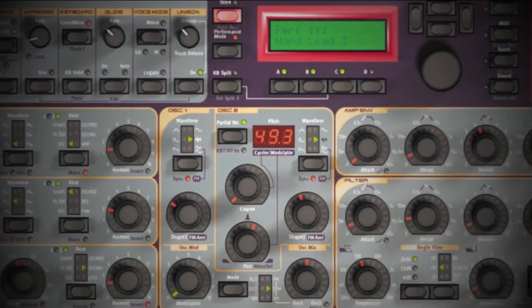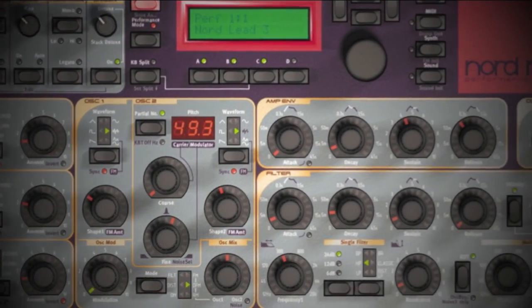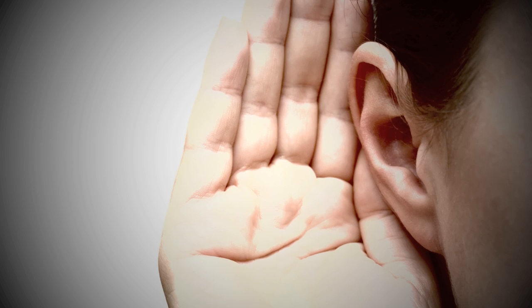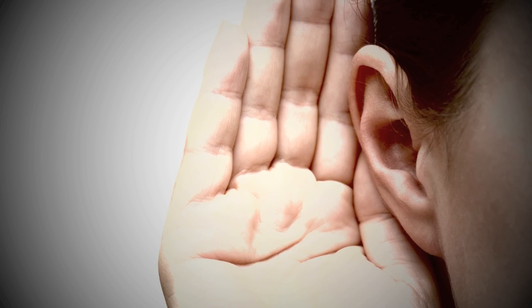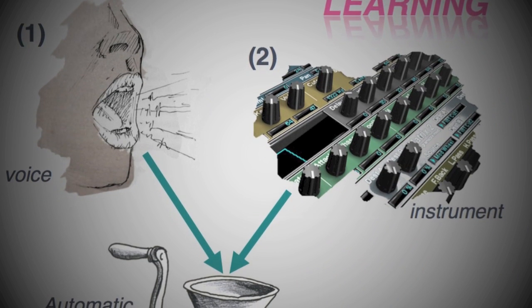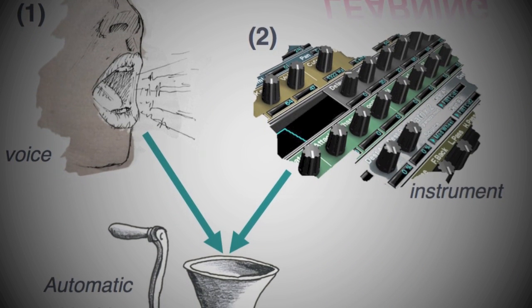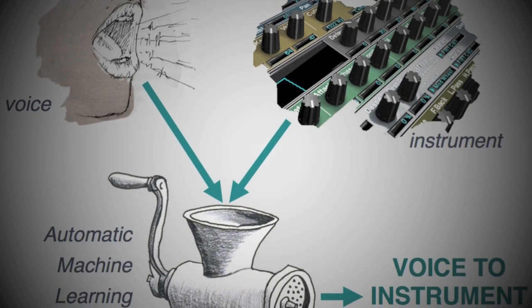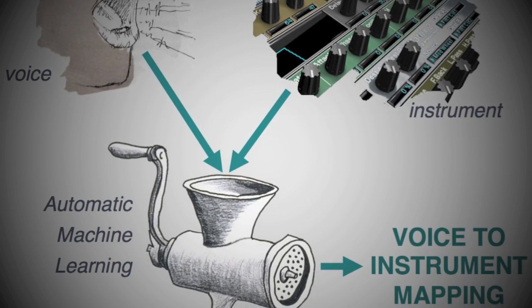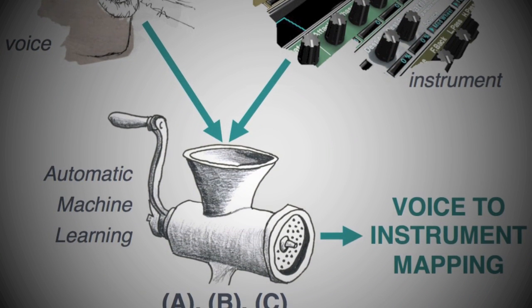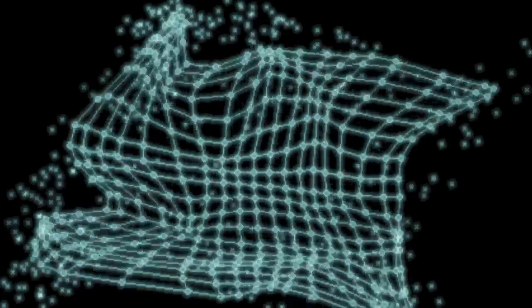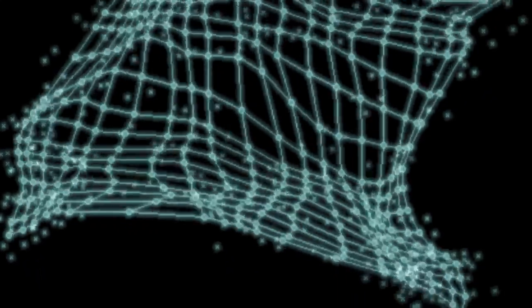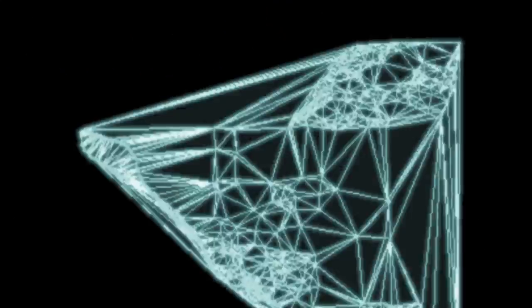The target of the voice control is an arbitrary number of continuous instrument parameters that, when changed, result in a modification of the sound timbre or texture. The user provides voice varying and constant examples, and identifies the instrument parameters target of the vocal control. The learning system analyzes the relationship between parameters and sound of the instrument, creating a sonic map. Then it analyzes the voice examples to identify robust and independent control signals, and finally finds the ad hoc transformation between these that maximizes the breadth of explorable sonic space.